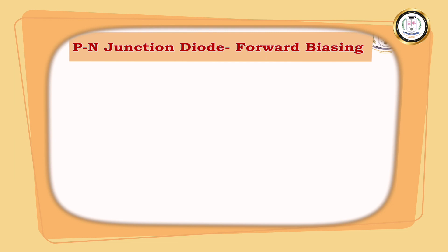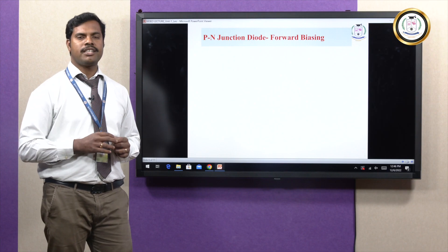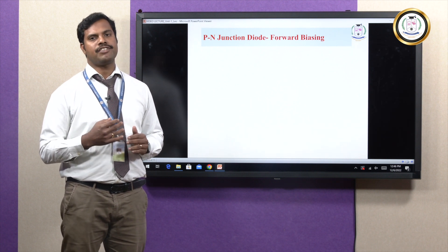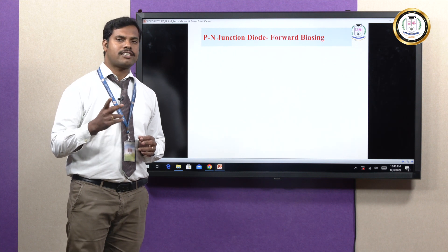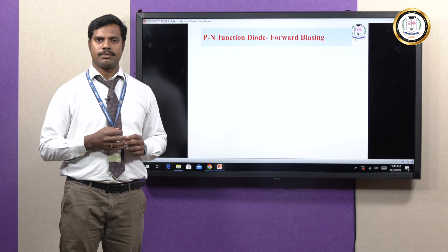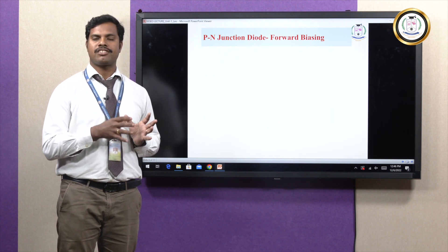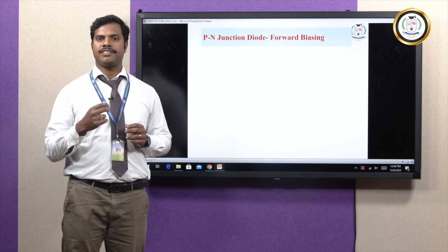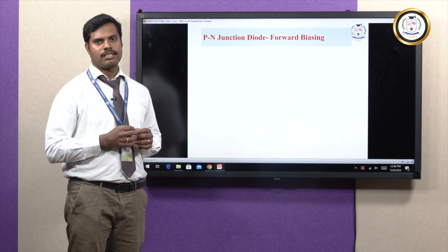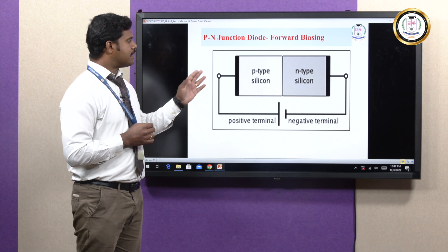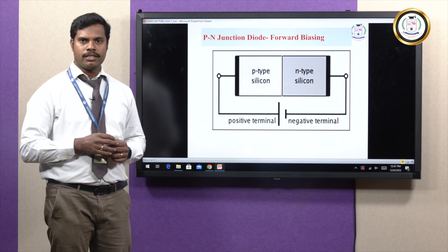P-N junction diode operation mainly depends on the external voltage applied. These operations can be classified into two types: forward bias and reverse bias. In forward bias, the P-type material — where holes are the majority carrier — is connected to the positive terminal of the battery, and the N-type is connected to the negative terminal of the battery.